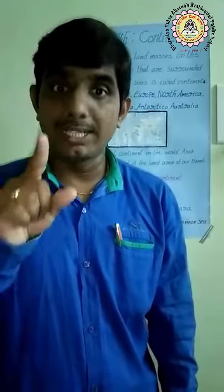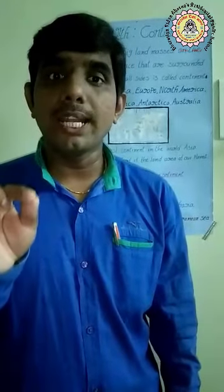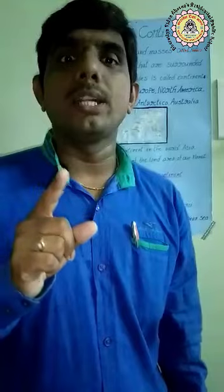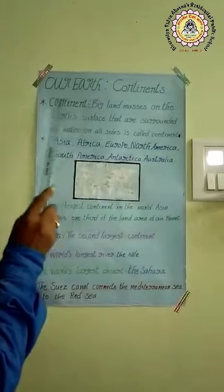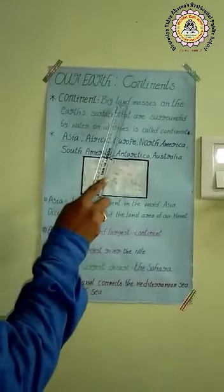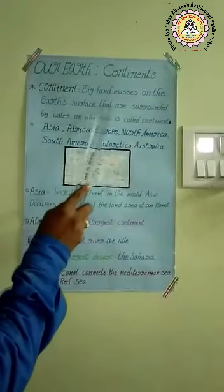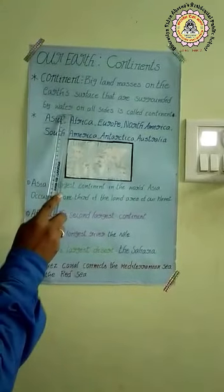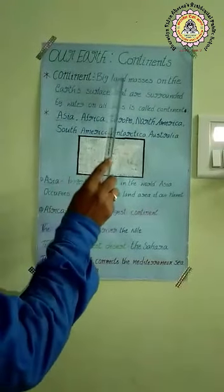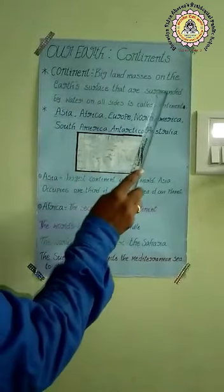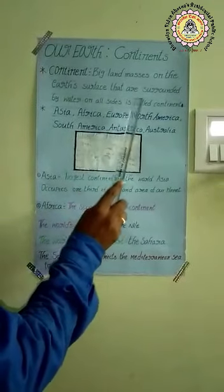Here is a new word: continent. The spelling is C-O-N-T-I-N-E-N-T. The meaning of the word continent: big land masses on the earth's surface that are surrounded by water on all sides is called a continent.